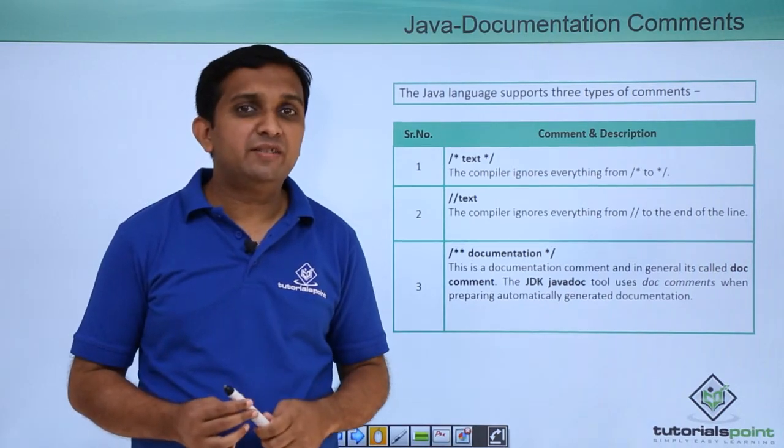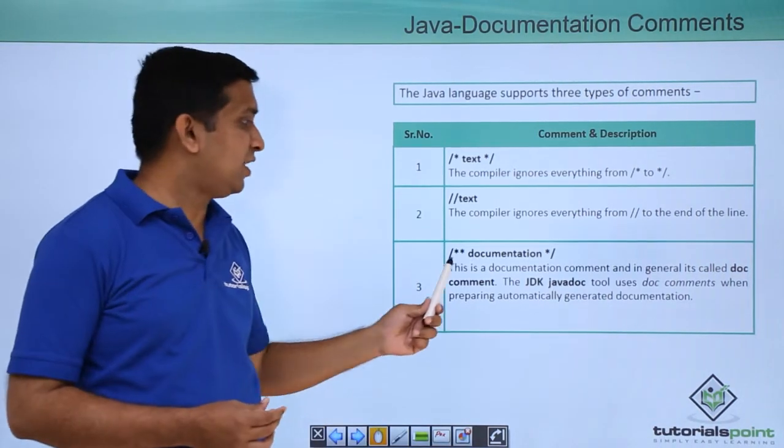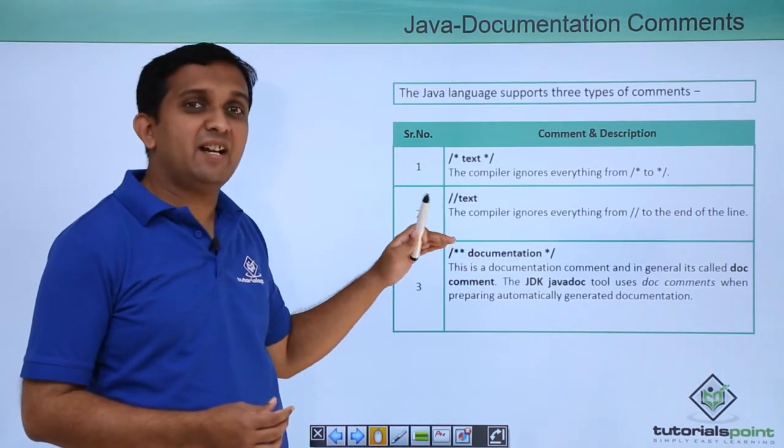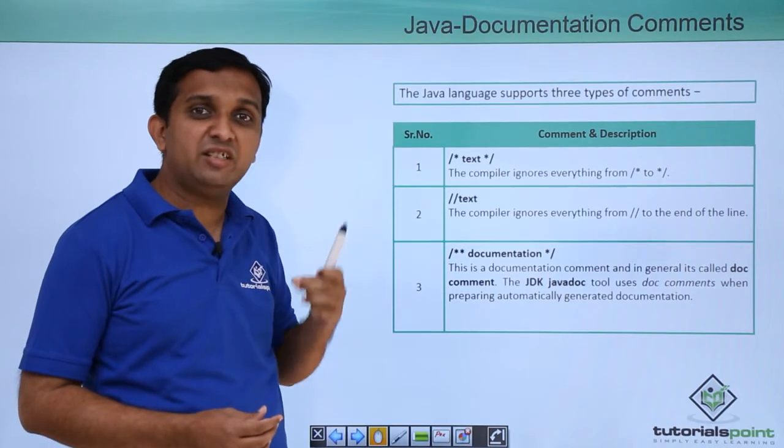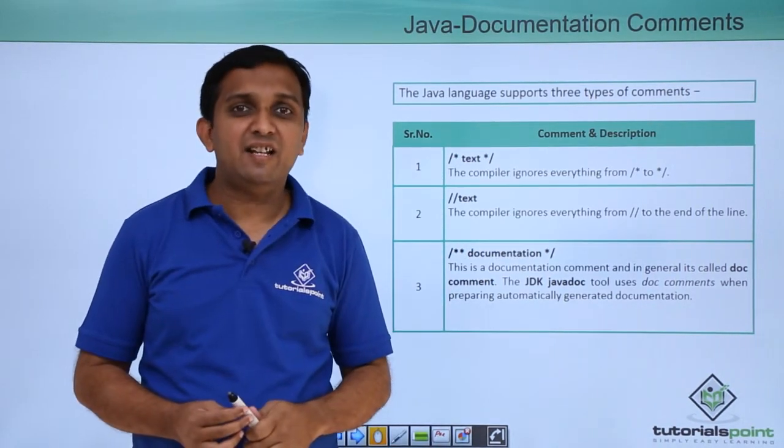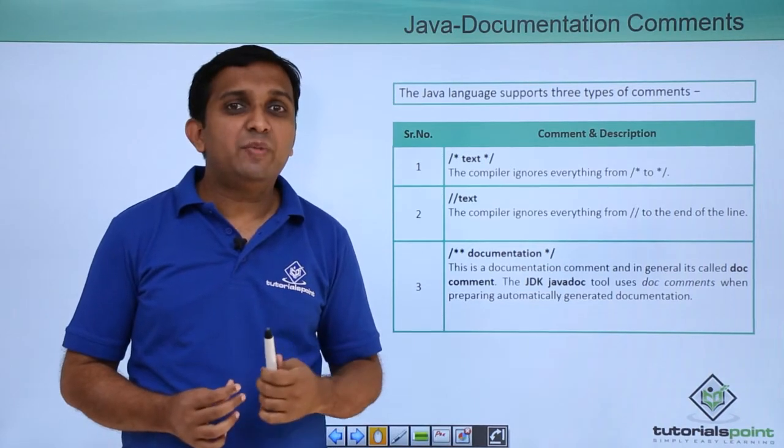One more type of comment is there which is called documentation comment and it is represented like this: slash star, after that you will write star on each line and at the end you will write star slash. This is called documentation comment.